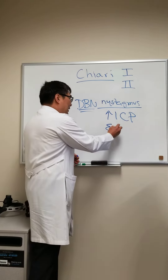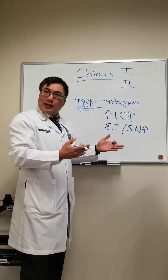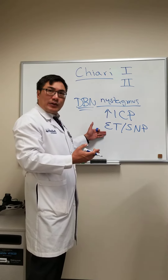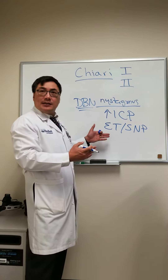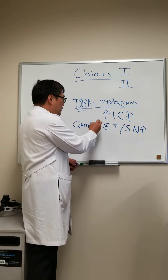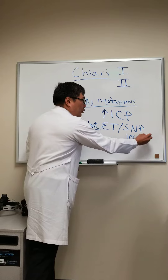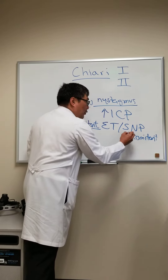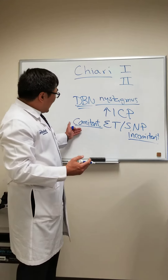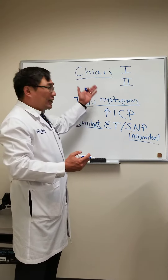We can also see esotropia, either from a 6th nerve palsy that is non-localizing and increased intracranial pressure related, or patients sometimes present with acute comitant esotropia. Comitant means it's the same in all directions — as opposed to a 6th nerve palsy, which is normally incomitant and worse toward the direction of the weak lateral rectus. A comitant esotropia may be the presenting or only sign of the Chiari malformation.